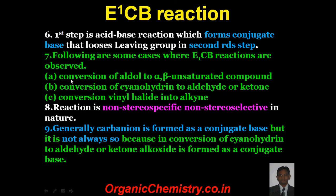Following are some examples of E1CB reactions. First, the conversion of aldol beta-hydroxy aldehyde or ketones to alpha-beta unsaturated compounds — this is an example of E1CB. Conversion of cyanohydrin, which is the molecule in which the carbon is having OH and CN group from aldehyde and ketone, is also an example of E1CB. Conversion of vinyl halide to alkyne in presence of NaNH₂ is also an example of E1CB. This reaction is non-stereospecific and non-stereoselective. Generally, a carbanion is formed as a conjugate base, but not always — for example, in conversion of cyanohydrin to aldehyde or ketone, an alkoxide is formed as the conjugate base.